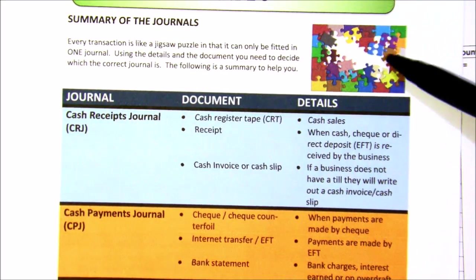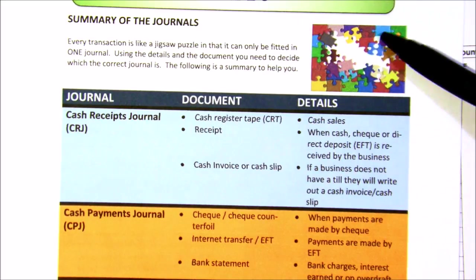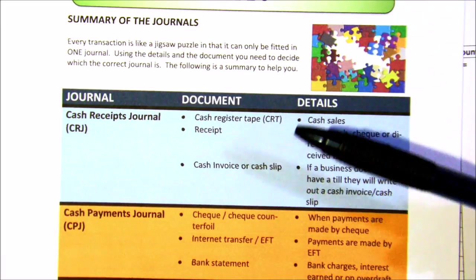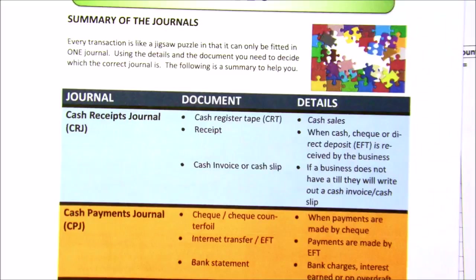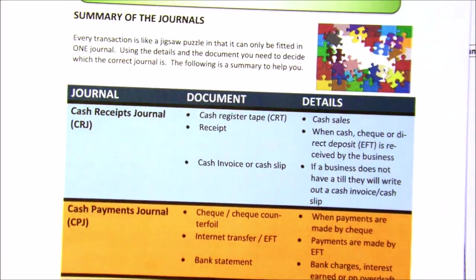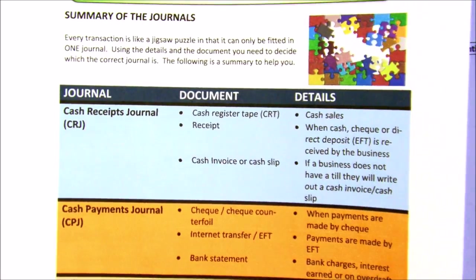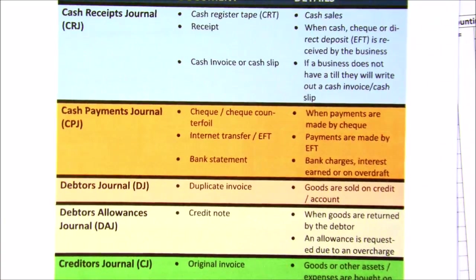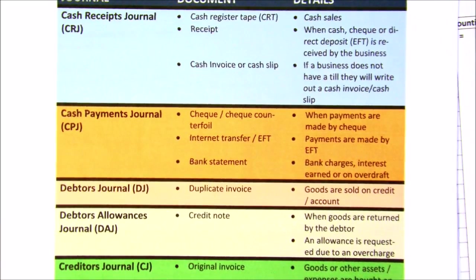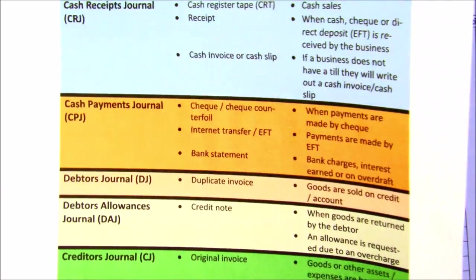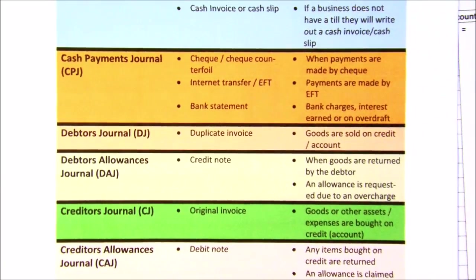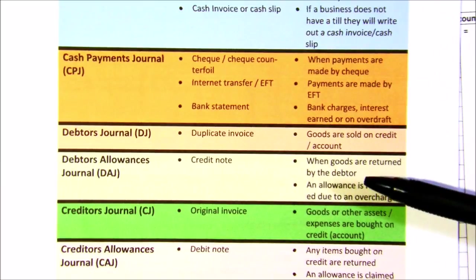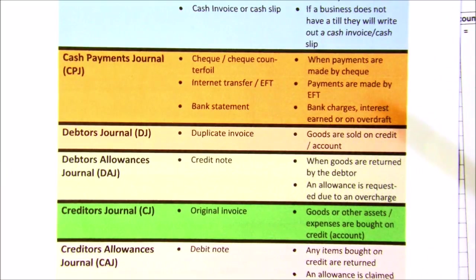I've put a picture of a jigsaw puzzle here. This is extremely important because every entry is like one of these pieces — it fits in only one place. You need to go through and be able to identify which journal each entry goes into. The journals are: cash receipts, cash payments, debtors, debtors' allowances, creditors, and creditors' allowances journal. I've given you the document that is relevant with details to explain it, so please get a copy for yourself and get to know it.